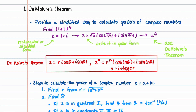Let's say we need to find 1 plus i raised to the sixth power. This complex number is written in rectangular or standard form. To compute this power, we need to write our complex number in polar form and then use De Moivre's Theorem to compute the power.